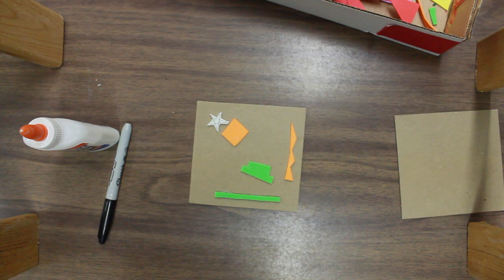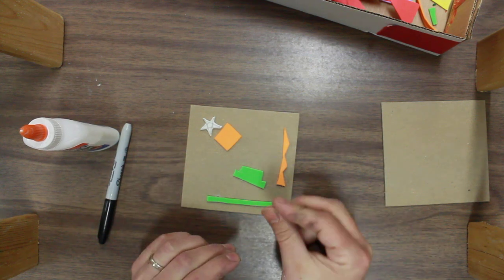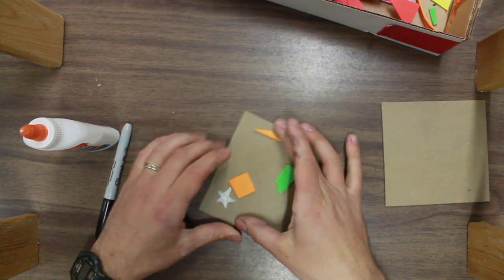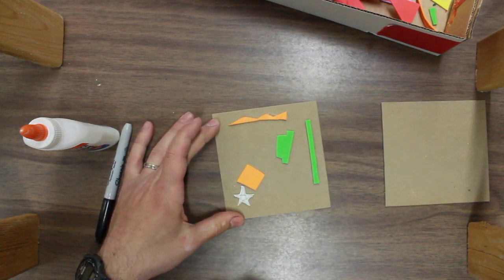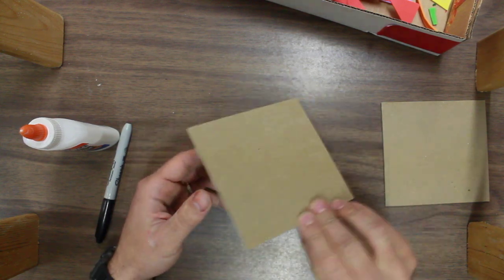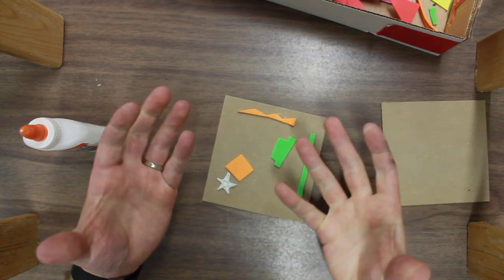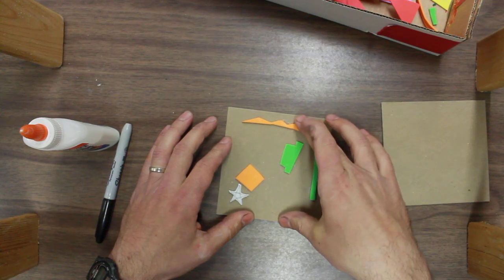A colograph stamp is when you take pieces of paper or something that's thicker, you glue it down onto a plate or surface and it gets a raised surface. Then what we do is we ink it up with some rollers and then we use it like a stamp. That's what a colograph is, it's all about having shapes that are raised up on a surface.